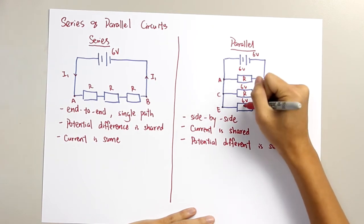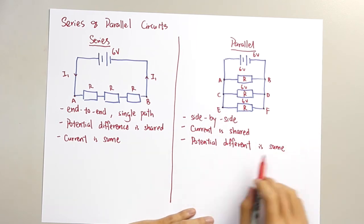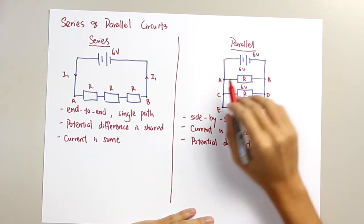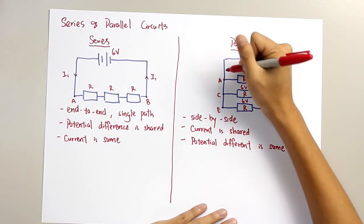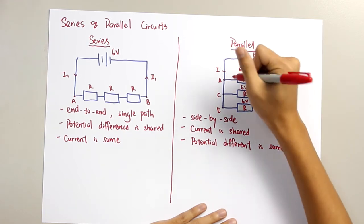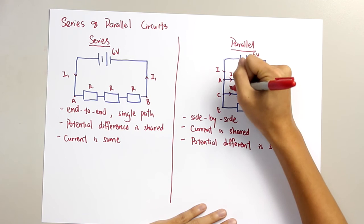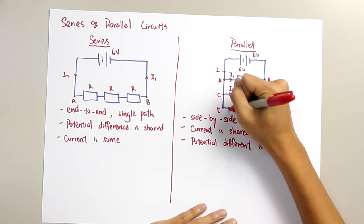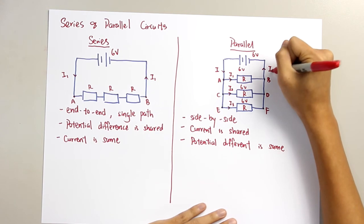And this has the same resistance. Therefore, we said that the potential difference across each component are the same. And so, the current from this will be equally shared to I2 and I3, and it comes back again as I.